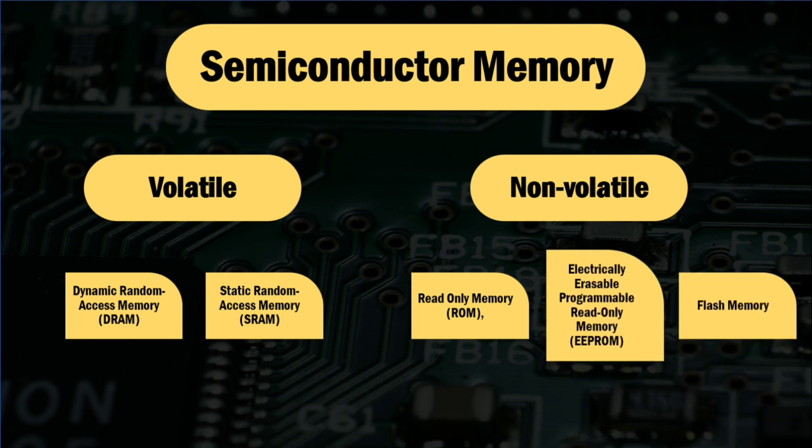The second category of semiconductor memory is non-volatile memory, such as read-only memory (ROM), flash memory, and electrically erasable programmable read-only memory (EEPROM). This type of semiconductor memory can retain data even when power is turned off.